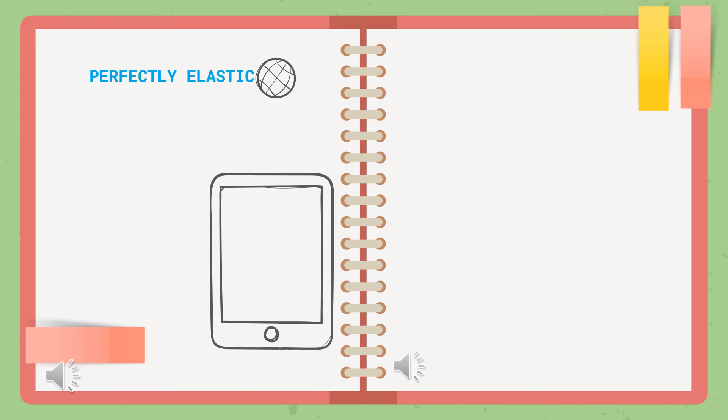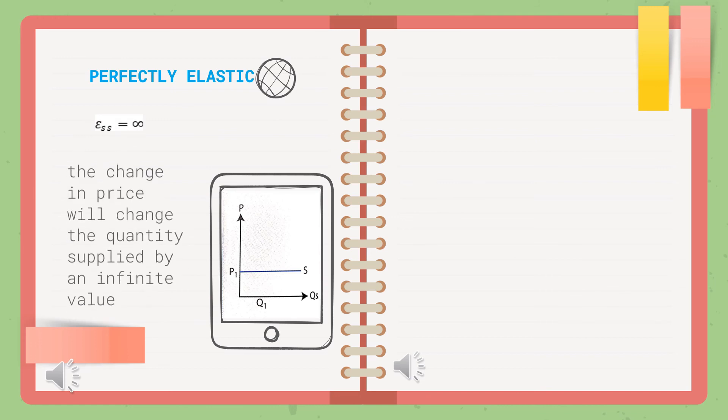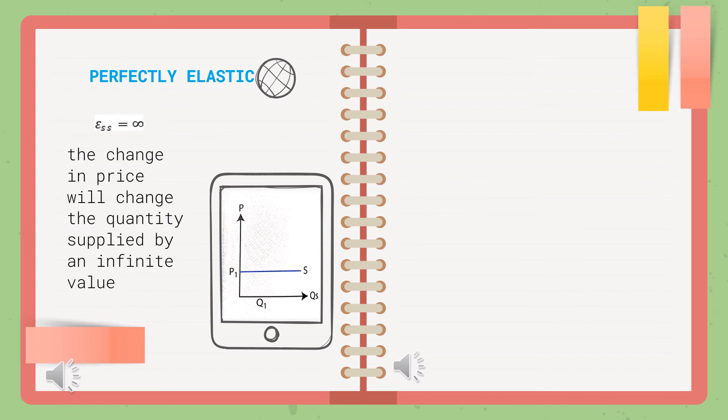The last degree is Perfectly Elastic, where elasticity equals an infinite value. A change in price will change the quantity supplied by an infinite value, meaning the quantity supplied is unlimited at any given price.